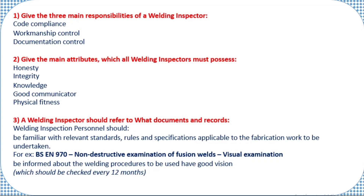The second question is: what are the main attributes which all welding inspectors must possess? These are basic things every welder or welding inspector should have. First is honesty, then integrity, then knowledge — without knowledge we cannot do welding inspection. A good communicator is also required, meaning you should clearly understand what a welder is telling you. Finally, physical fitness is required because in stringent conditions you may need to check the weld in difficult environments.